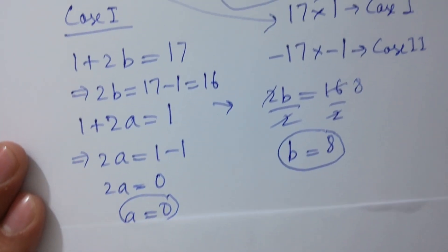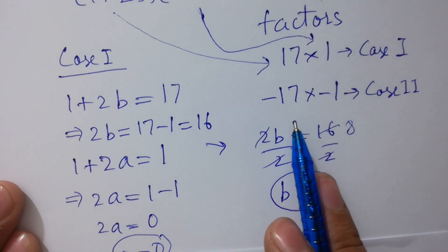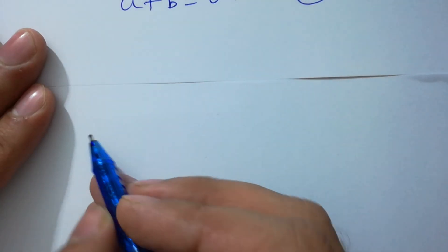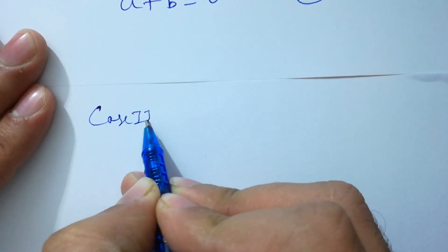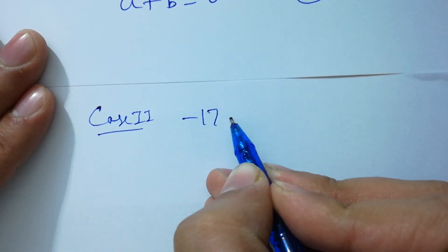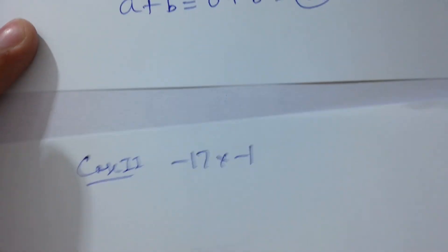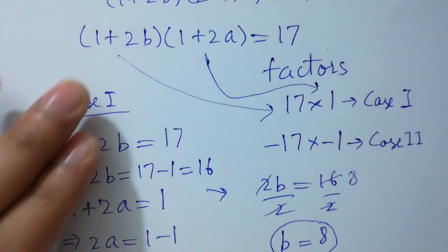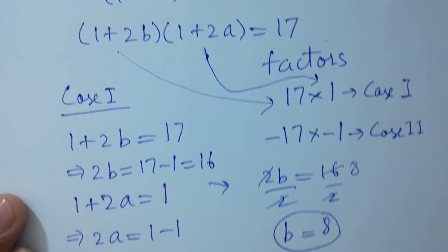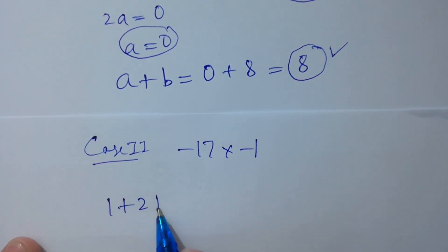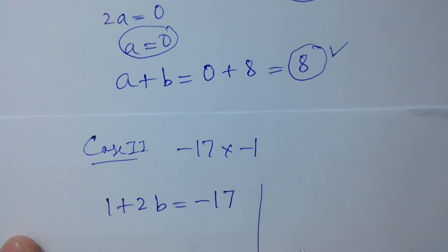Now take the second case, which is minus 17 times minus 1. In case 2: (1 plus 2√b) equals minus 17 and (1 plus 2√a) equals minus 1.